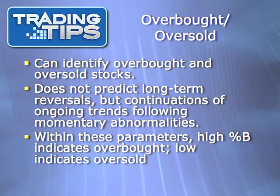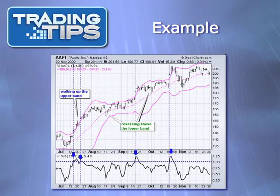Within these parameters, a high percentage B indicates a stock that is overbought, while a low percentage B indicates a stock that is oversold. Here is an example of a stock chart with a Bollinger Bands overlay and Bollinger Band Percentage B included on the bottom of the chart. Notice in the first instance in which percentage B exceeded 1, indicating that it might be overbought, the stock continued higher.